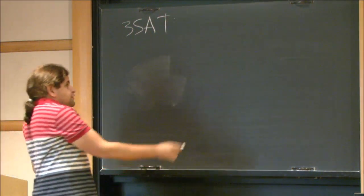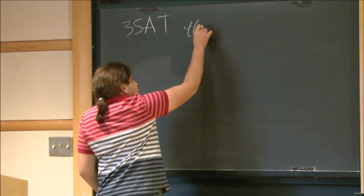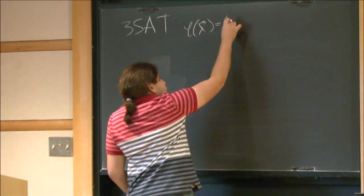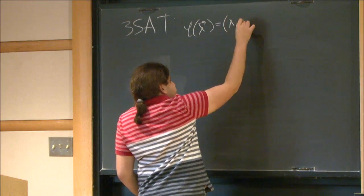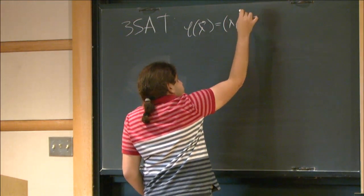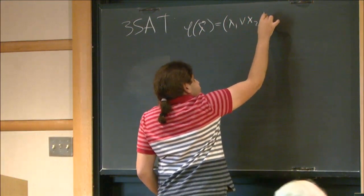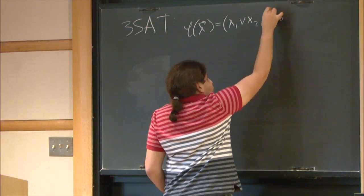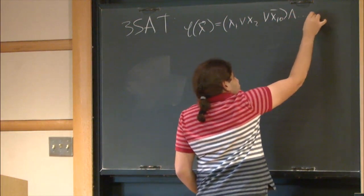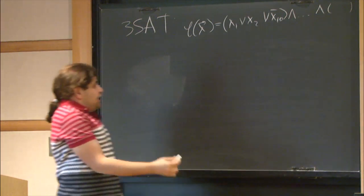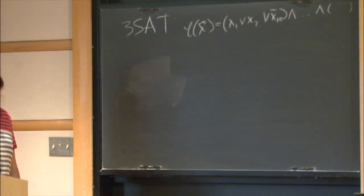So, I give you a three-SAT formula, phi, which is basically n clauses of size 3. And I ask you, is this formula satisfiable or not?